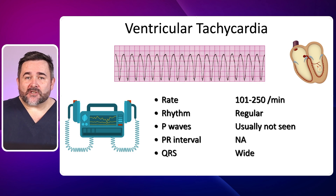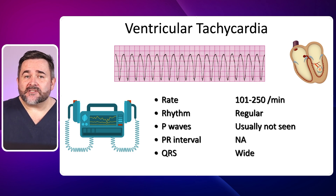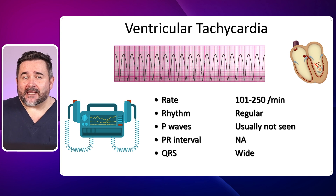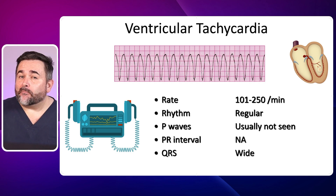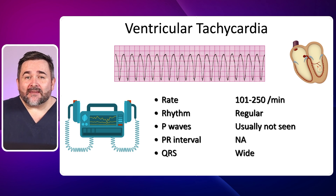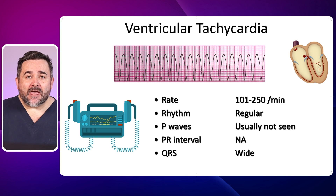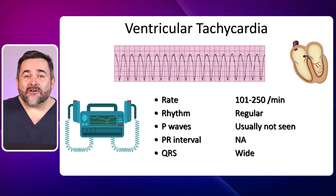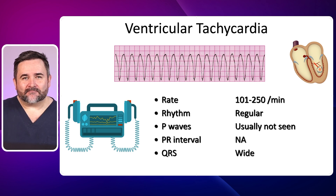Causes of ventricular tachycardia include hypoxia, post-MI, low potassium, and low magnesium. Remember that for pulseless VT you will perform defibrillation, and for an unstable VT with a pulse, you perform synchronized cardioversion.